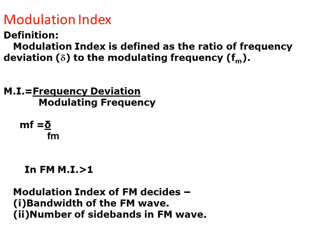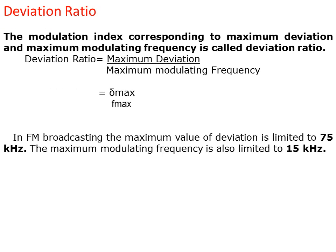Modulation index is defined as the ratio of frequency deviation to the modulating frequency. Modulation index equals frequency deviation divided by modulating frequency. In frequency modulation, modulation index should be greater than 1. The modulating frequency is defined as the number of sidebands in the FM wave. The maximum modulating frequency will give a deviation ratio.